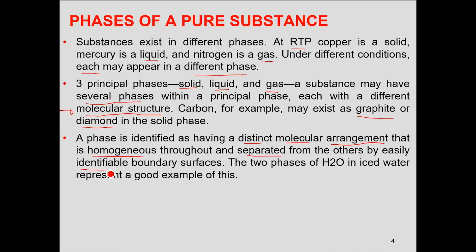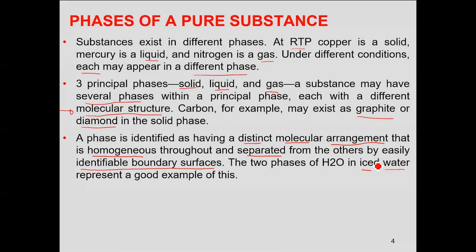A phase is identified as having a distinct molecular or atomic arrangement that is homogeneous throughout the material and is separated from other phases by an easily identifiable boundary or surface. For example, in a mixture of ice and water, ice has its own molecular structure, water in liquid state has its own molecular arrangement, and the distinction between the two is the interface boundary between the solid and liquid phases.